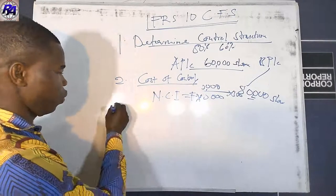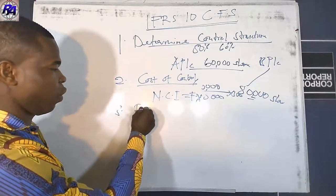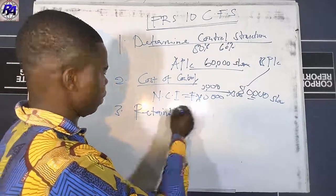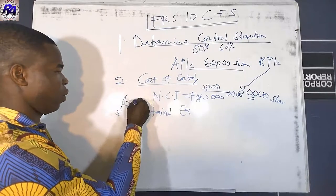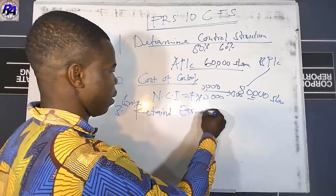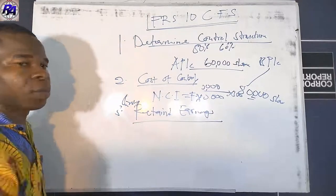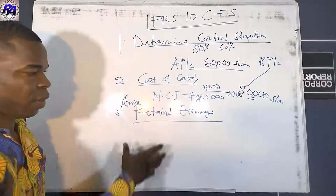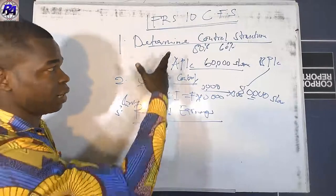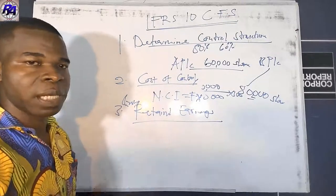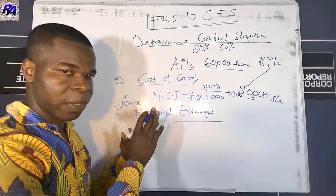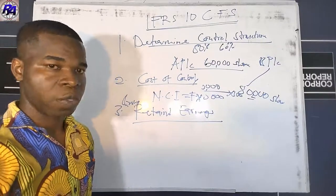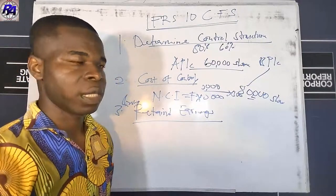The third step is to calculate group retained earnings. After that, the fourth step is to determine NCI holdings. Once you have determined NCI holdings, you can prepare the consolidated group statement of financial position. In this lesson, we are focusing first on the consolidated statement of financial position — previously known as the balance sheet — then the income statement, and later the cash flow statement.